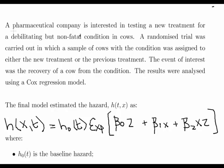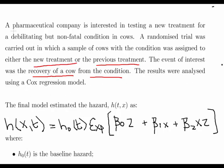In this presentation we are going to look at survival analysis and in particular Cox proportional hazard models. A pharmaceutical company is interested in testing a new treatment for a debilitating but non-fatal condition in cows. A randomized trial was carried out in which a sample of cows with the condition was assigned to either the new treatment or the previous treatment. The event of interest was the recovery of a cow from the condition, and the results were analyzed with a Cox regression model.